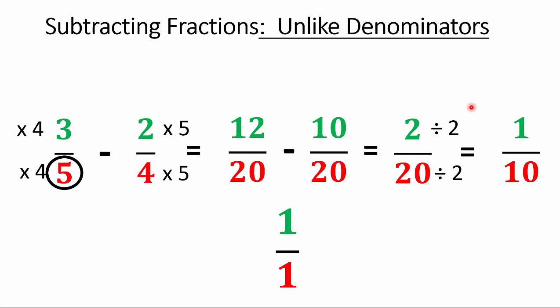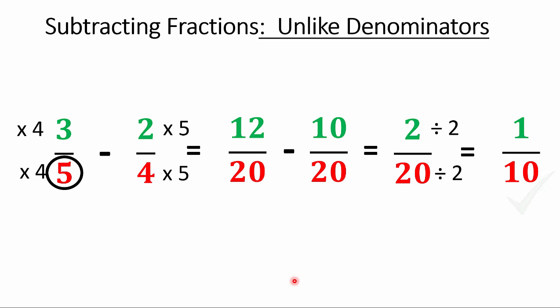Common error: if you subtract the numerators and then subtract the denominators, you get one over one — that will make me so sad. Common error number two: getting this far is good for part marks, but if you leave two-twentieths as your final answer without reducing, you'll lose half a mark. Even if I don't tell you, always reduce your fractions — it's good for you.